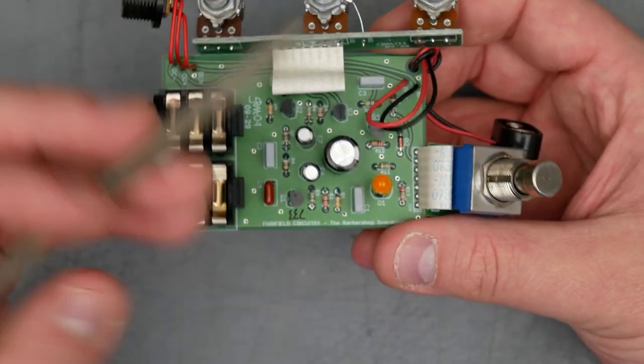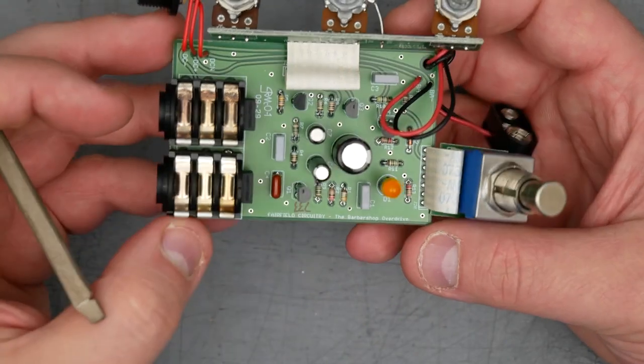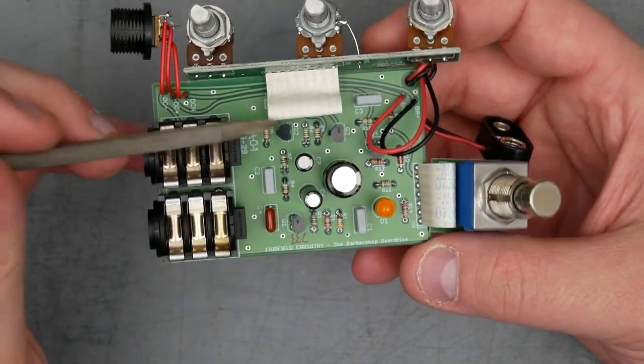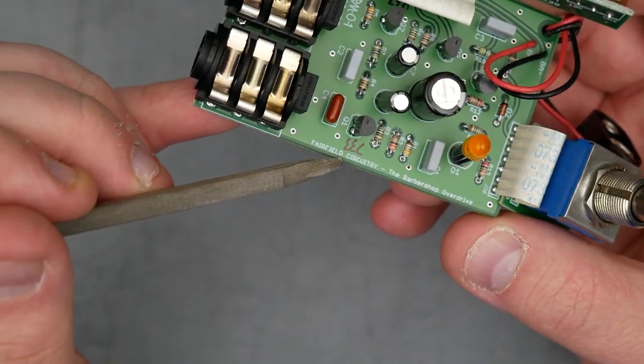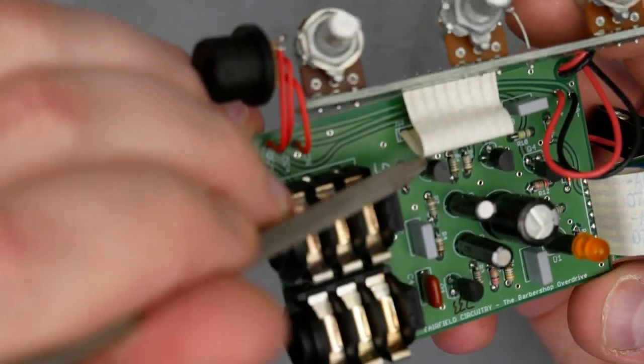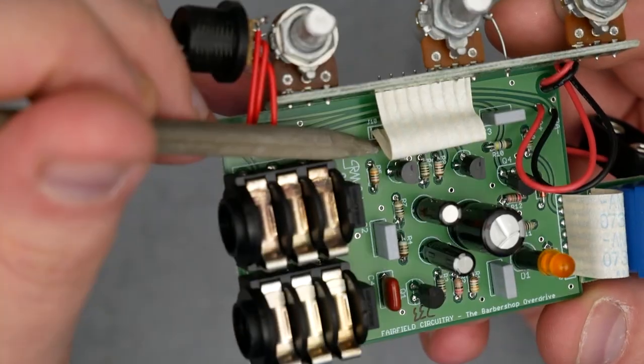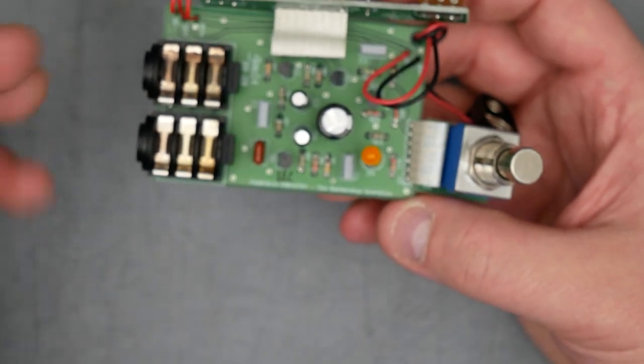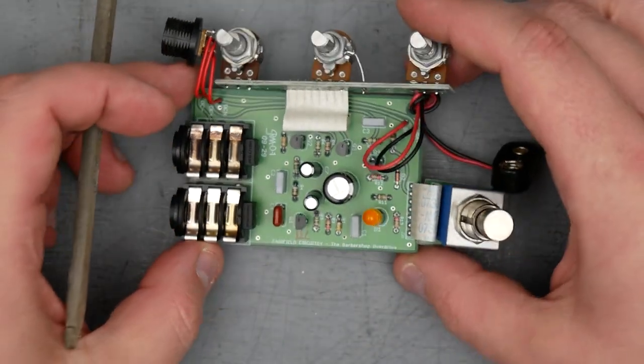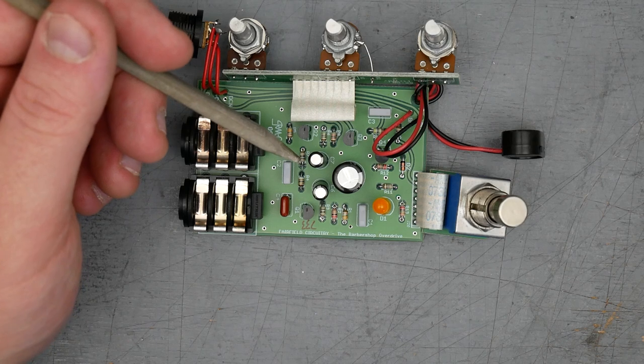So on the top side here, we have four TO92 packages. Two of these are the JFETs that are part of the audio circuit. So if you can see there, this one is actually marked 733, and underneath it's hard to see, but this one has a marking of 463. These are written in like Sharpie pen. Those numbers are almost definitely the IDSS of the JFET transistor.